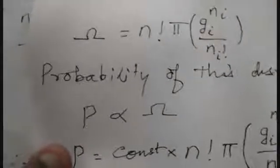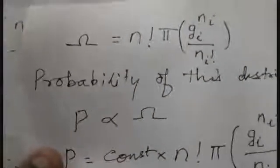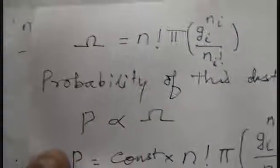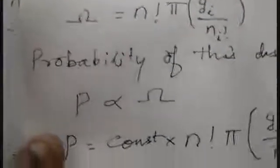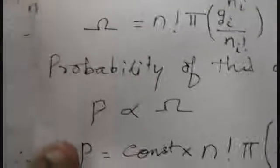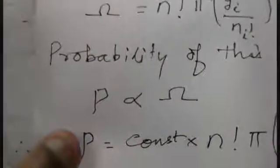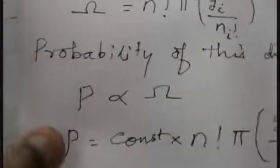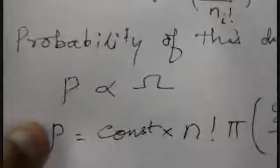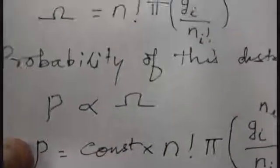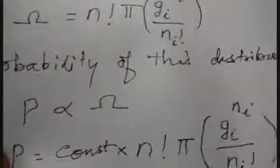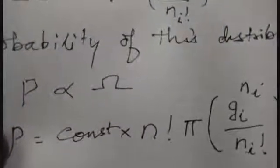In the distribution of probability, P is proportional to omega. Therefore, probability P equals a constant times omega, which is: P equals constant times N-factorial times pi of Gi raised to Ni divided by Ni-factorial.